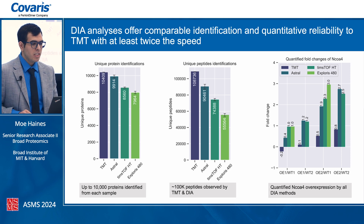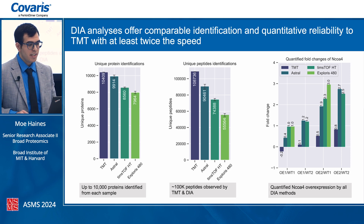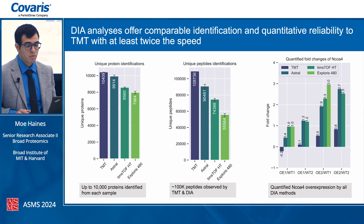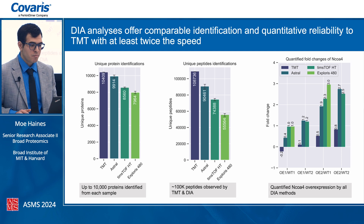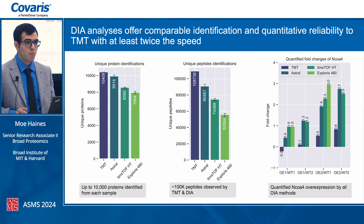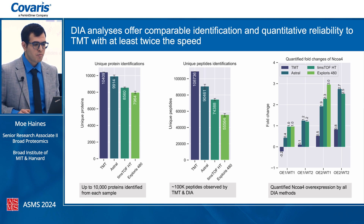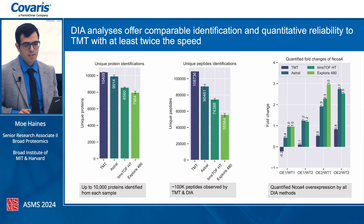As expected, TMT provides the highest protein identifications at 10,400 unique proteins. However, Astral is almost at 10,000, which is phenomenal for running 60 samples per day with only two days of sample prep. The TimsTOF HD and Explorer 480 both range around 8,000 protein identifications.